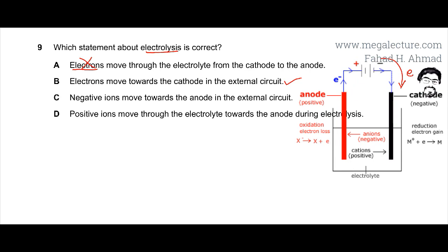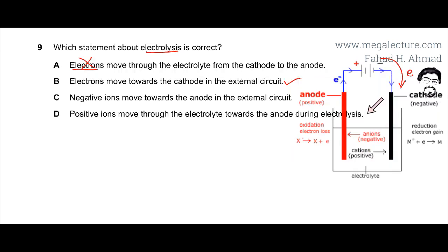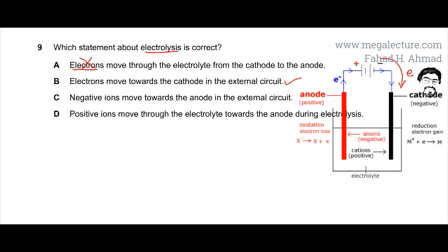This is the movement of electrons, and in the solution you're going to have ions — negative ions and positive ions. The negative ions are going to get attracted to the positive anode, where they are going to lose electrons. That would be called oxidation.